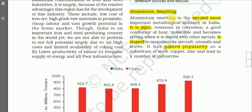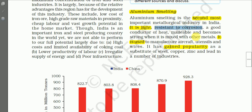Aluminum smelting is the second most important metallurgical industry in India, the first being the iron and steel industry. About the properties of aluminum: it is light, resistant to corrosion — meaning no rusting — a good conductor of heat, and malleable, meaning capable of being shaped or bent or drawn out. It becomes strong when mixed with other metals.